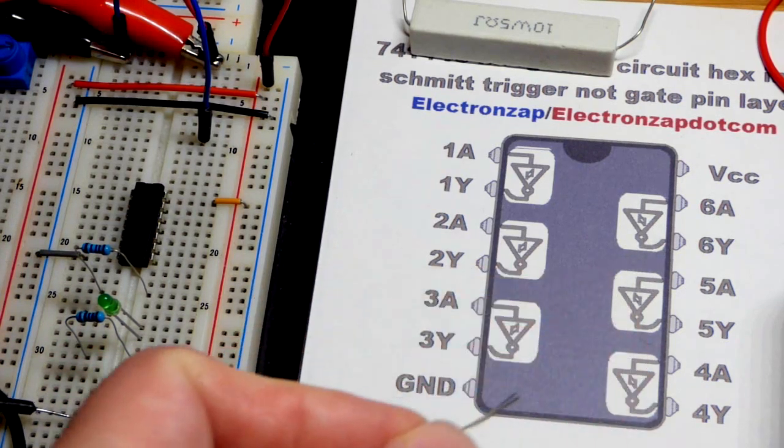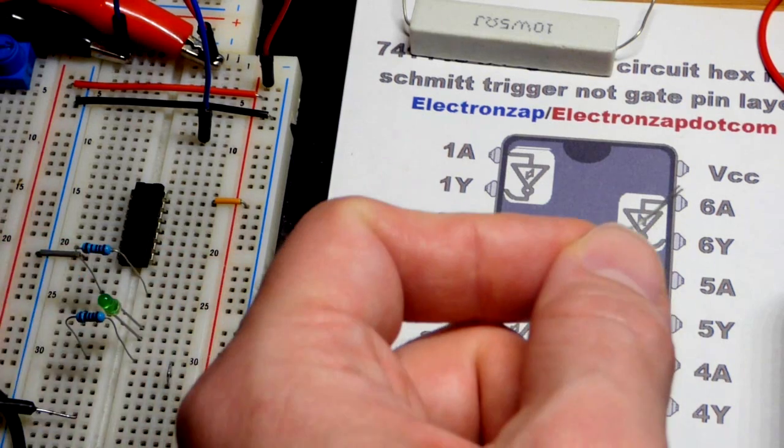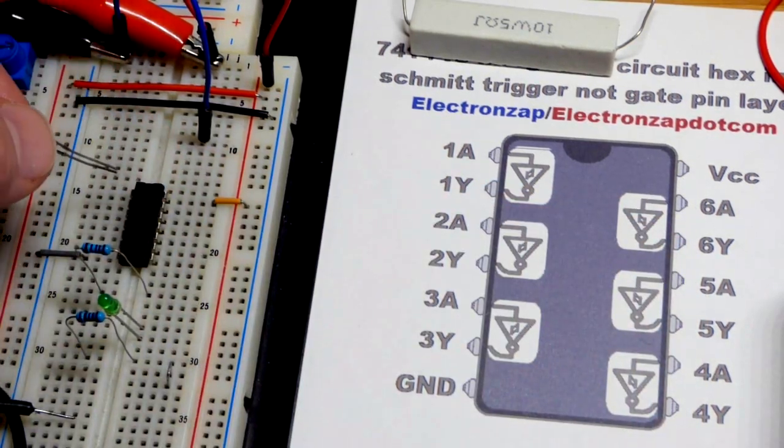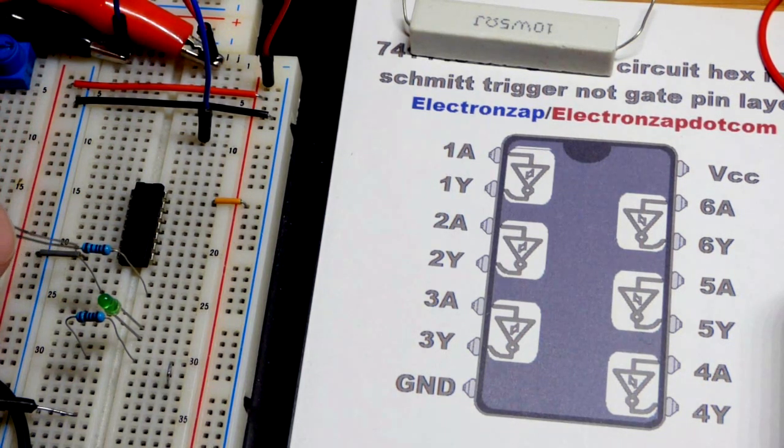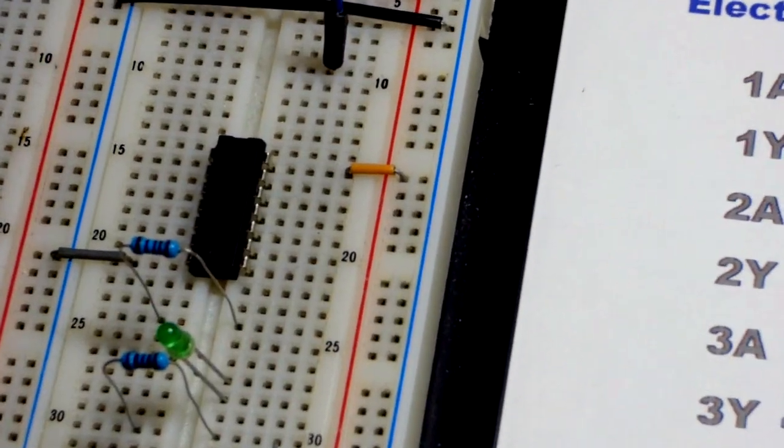Over there we have pin number 7 to the negative rail, because we do have to power this. The output is powered by the board. And then pin number 14 up here goes to the positive rail. So you start 1 up there, work your way down. There's a little divot up there so you know it's the top. Work your way down to 7, jump across 8, work your way up to 14.